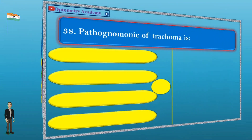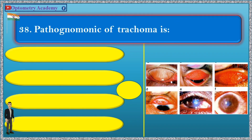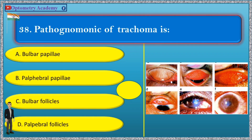Question 38. Pathognomonic of trachoma is: A. Bulbar papilla, B. Palpebral papilla, C. Bulbar follicles, D. Palpebral follicles.